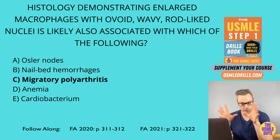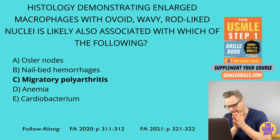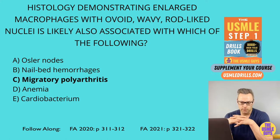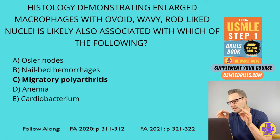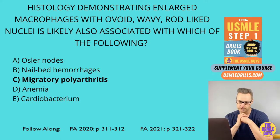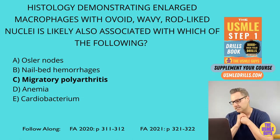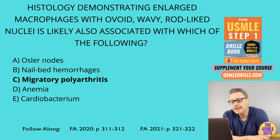The correct answer here is C. This vignette is describing the histology of Anitschkow cells, which are associated with rheumatic fever. Rheumatic fever is associated with strep pharyngitis. Remember, this is most likely to affect the mitral valve. It creates early lesions that can lead to mitral regurgitation, or late lesions that can cause mitral stenosis. Remember, this is immune-mediated — it's not a direct effect of the bacteria. This is a Type 2 hypersensitivity reaction.